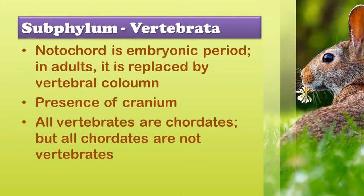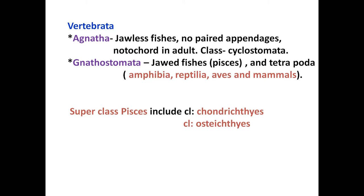Subphylum Vertebrata. 'Vertebra' means backbone. Notochord is present in the embryonic stage; in adults it is replaced by the vertebral column. They have a cranium or skull. All vertebrates are chordates, but all chordates are not vertebrates. Subphylum Vertebrata is divided into two divisions: Agnatha and Gnathostomata.